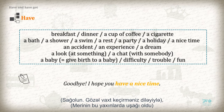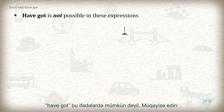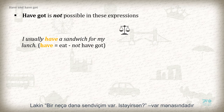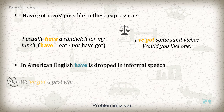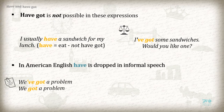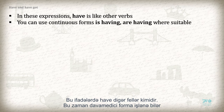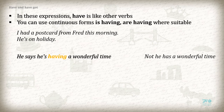Goodbye, I hope you have a nice time. Mary had a baby recently. Have got is not possible in these expressions. Compare: I usually have a sandwich for my lunch — have means eat, not have got. But: I have got some sandwiches, would you like one? In American English, have is dropped in informal speech, like: We have got a problem → We got a problem. In these expressions, have is like other verbs — you can use the continuous form: is having, are having, etc., where suitable. He is having a wonderful time. Not: He has a wonderful time.